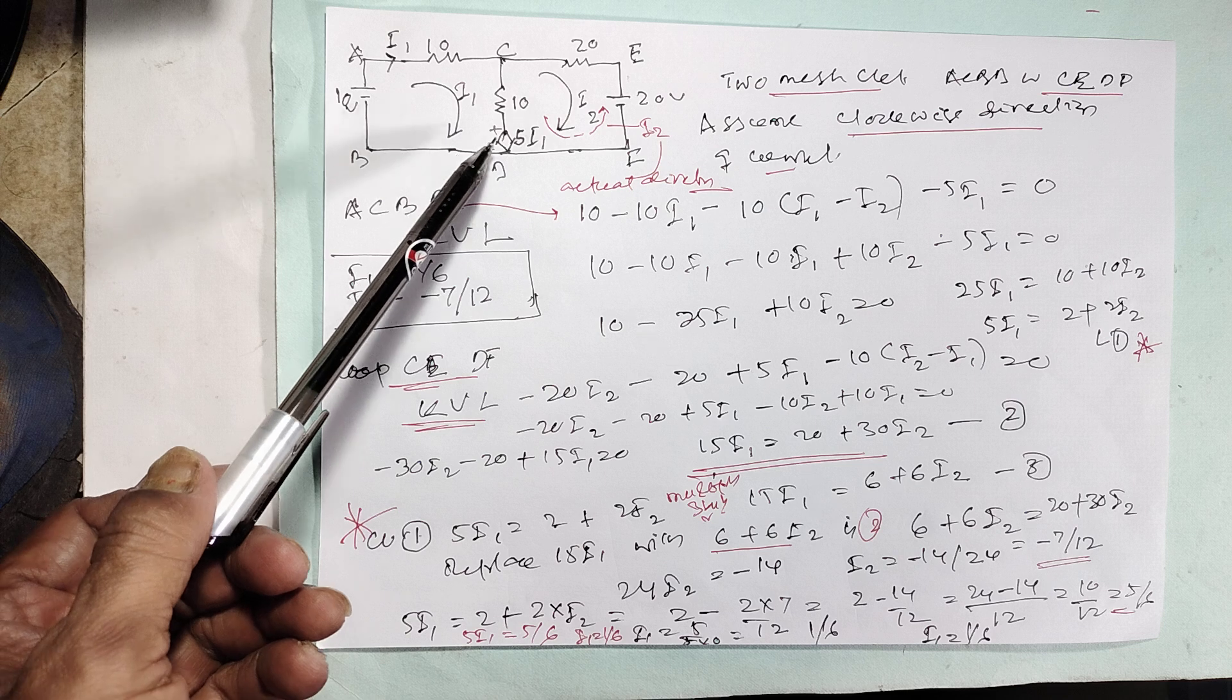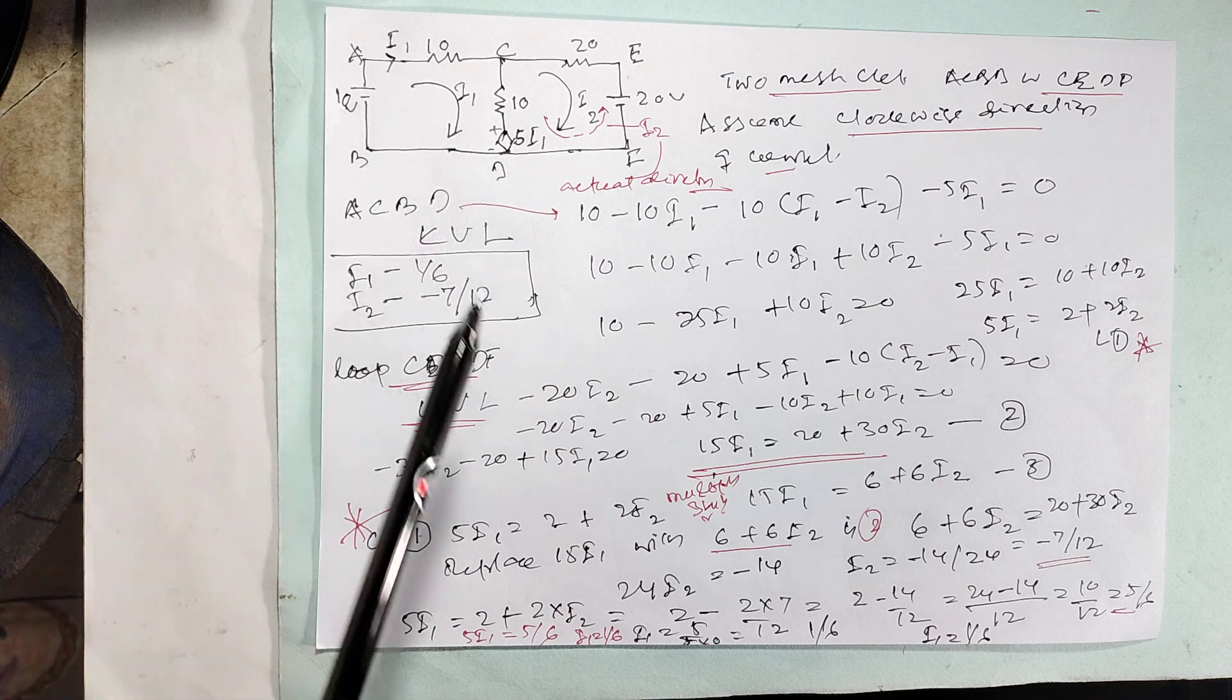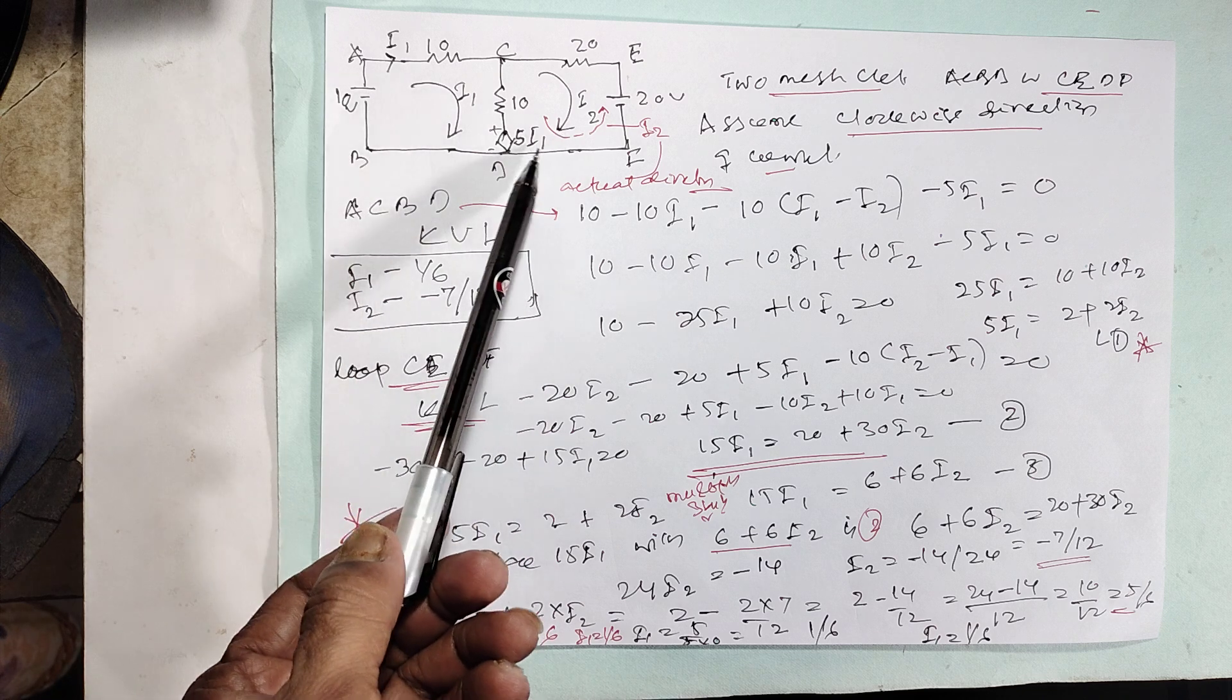One dependent source is there. You have to calculate this, this is the most important. Dependent source - why dependent? It depends upon the I1.